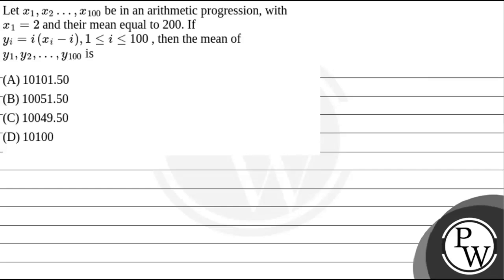Hello, Bachcho! Let's read this question. The question says, let x1, x2, and so on till x100 be in an arithmetic progression with x1 equal to 2 and their mean equal to 200. If yi is equal to i times xi minus i, for 1 less than or equal to i less than or equal to 100, then find the mean of y1, y2, and so on till y100.